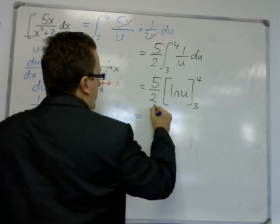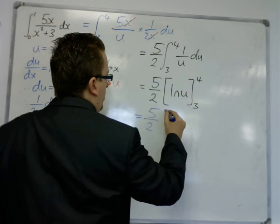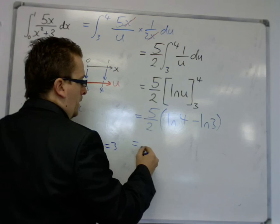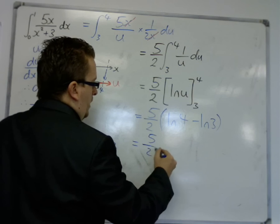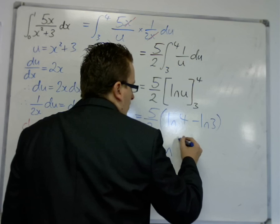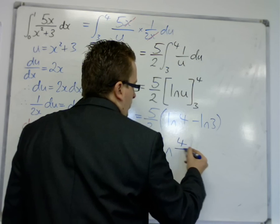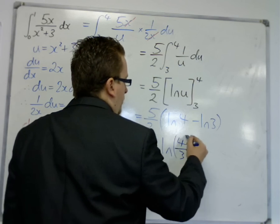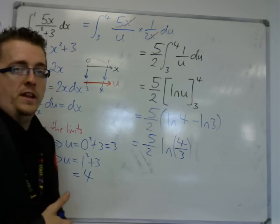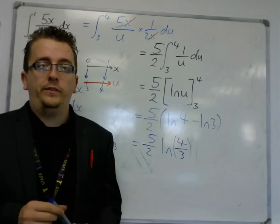So 1 over u integrates to log u, evaluated between 3 and 4. So this is 5 halves log 4 take away log 3, which is 5 halves of log. Now remember, those two can be combined using the log law. So we can write it as log of 4 thirds. So 5 halves log 4 thirds. And that is another example of integrating by substitution with a definite integral with a change of limits.